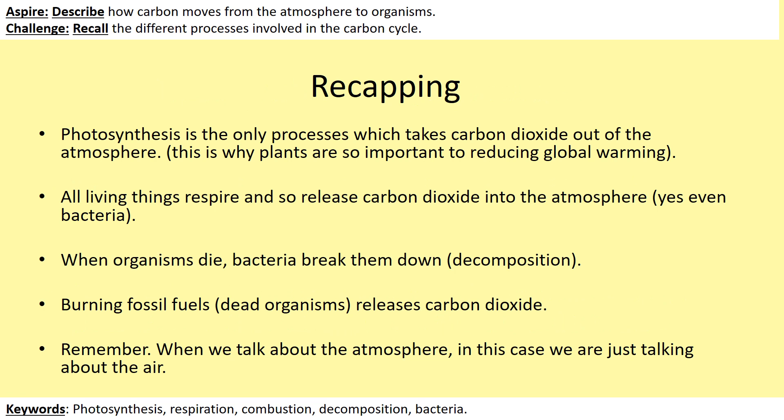Just to recap — it's a good idea to put this on a revision card. Photosynthesis is the only process which takes carbon dioxide out of the atmosphere; this is why plants are so important, as they're the only thing that can reduce carbon dioxide and reduce global warming. All living things respire, so they all release carbon dioxide into the atmosphere — even bacteria and plants. When organisms die, bacteria break them down through decomposition. Burning fossil fuels — the dead organisms — also releases carbon dioxide. When we talk about the atmosphere, we just mean the air.